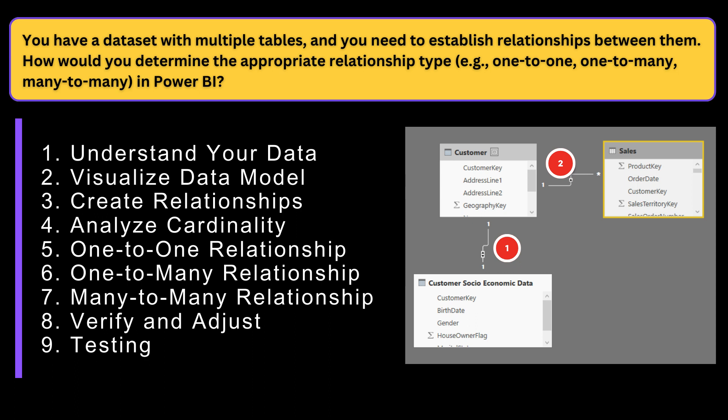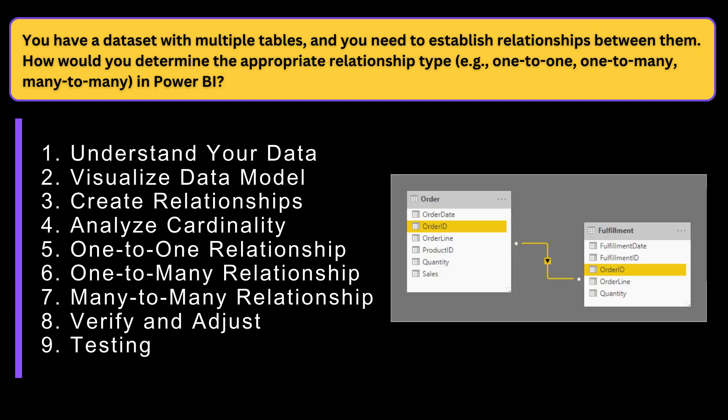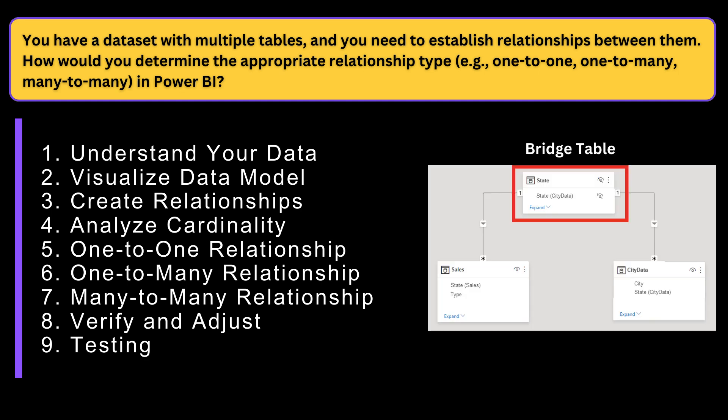A one-to-many relationship exists when each record in the primary key table can have multiple matching records in the related table, but each record in the related table corresponds to only one record in the primary key table. This is the most common relationship type in Power BI data modeling. A many-to-many relationship exists when each record in both tables can relate to multiple records in the other table. To represent a many-to-many relationship in Power BI, you typically need to create a bridge table in between, resolving the many-to-many into one-to-many relationships.